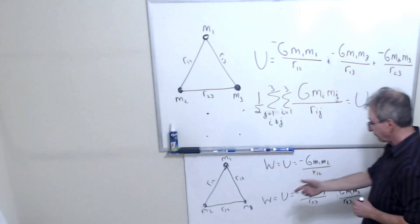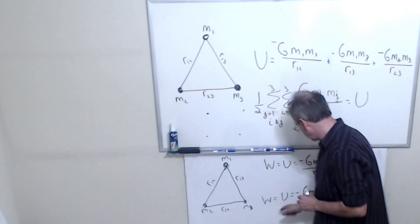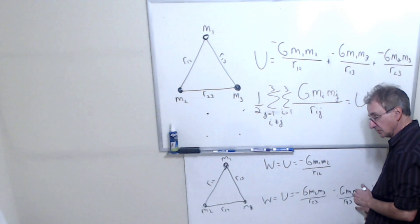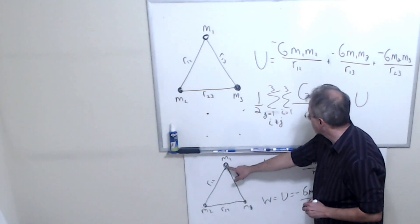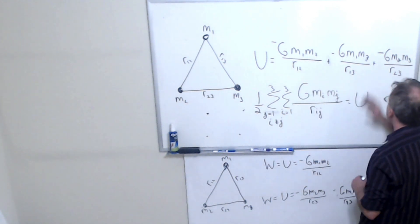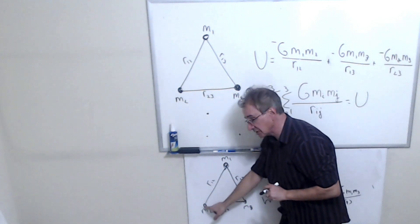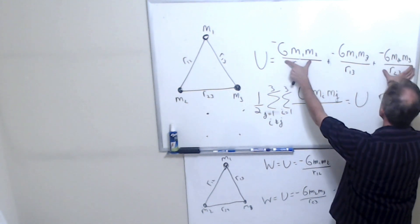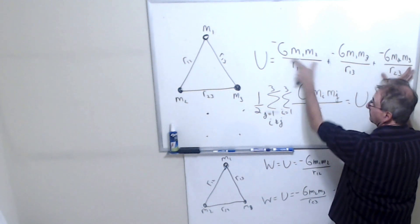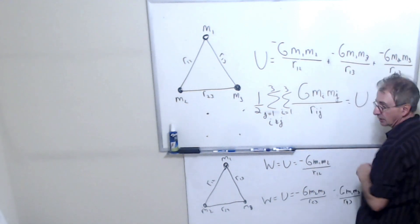If I want to find out the potential energy of this object, then I'll just consider these two terms. If I want to find the potential energy of this one, then I would just look at these two terms. If I want to find the potential energy at this location where M2 is, then it's going to be the sum of these two terms. The terms that have to include them. But for the whole system, I have to include all three terms.